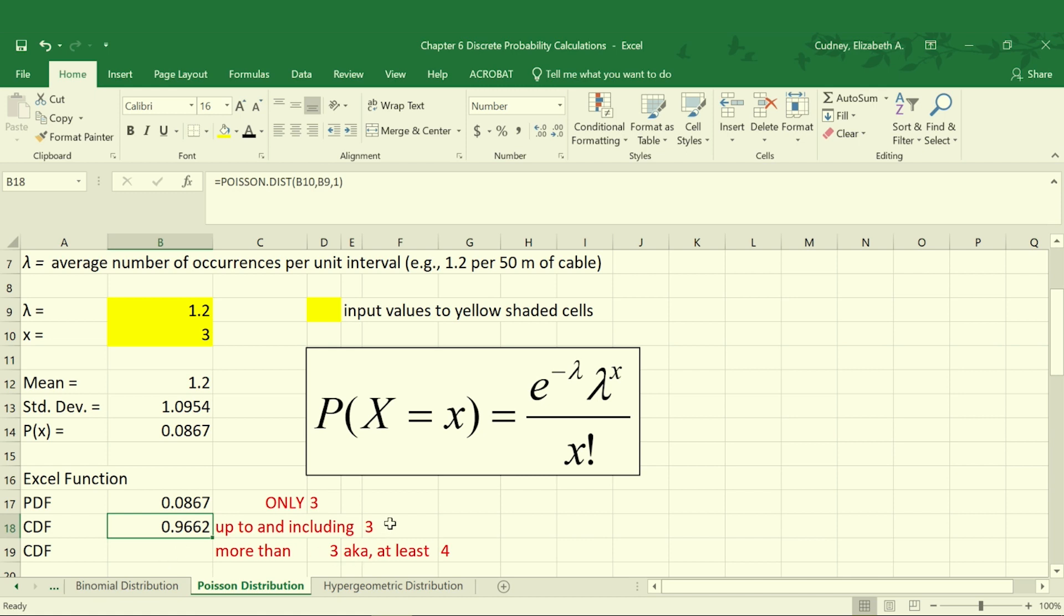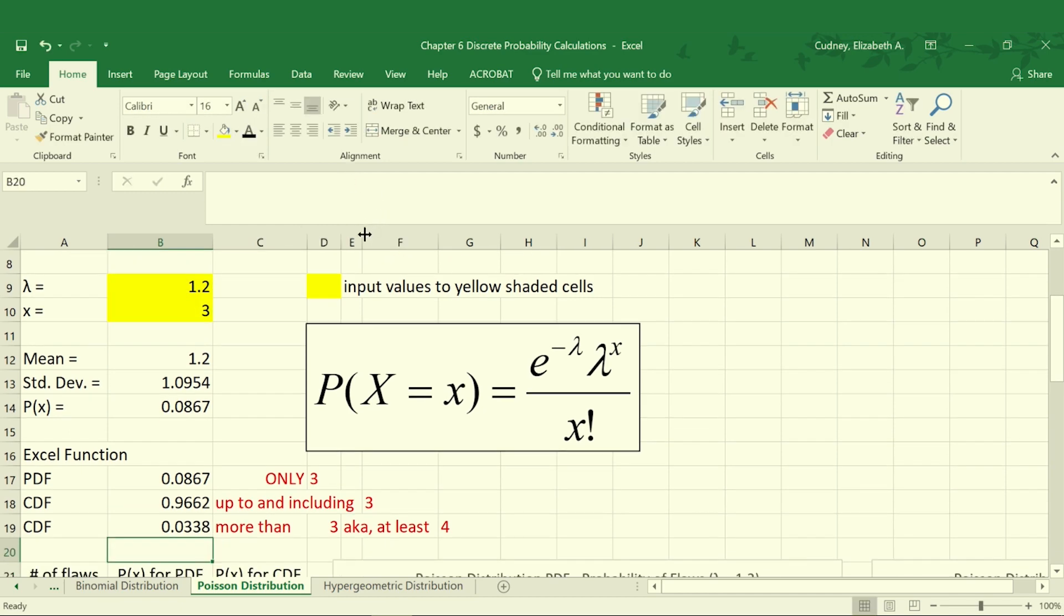If we want to know four or more, then we're going to take that function and subtract it from 1. So 1 minus our calculation for the cumulative gives us a value of 3.38%.